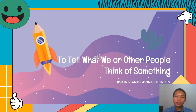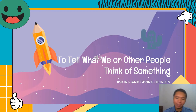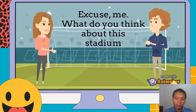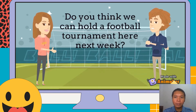Now the next topic: we will learn about asking and giving opinion. We need to learn how to ask for an opinion and also how to give an opinion. Let's look at the following example dialogue: 'Excuse me, what do you think about this stadium?' 'Well, I think it is a good stadium.' 'Do you think we can hold a football tournament here next week?' 'I think so.'